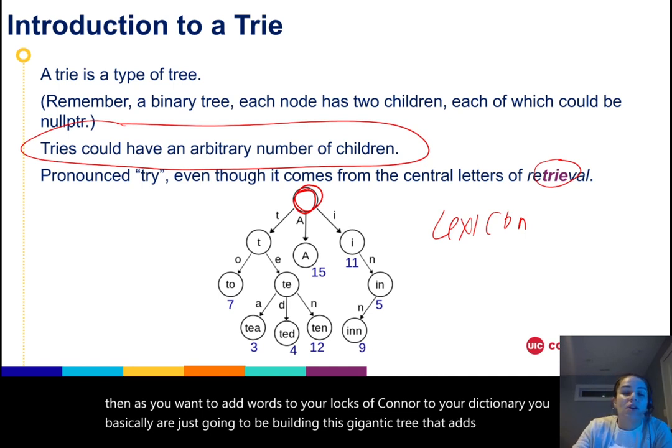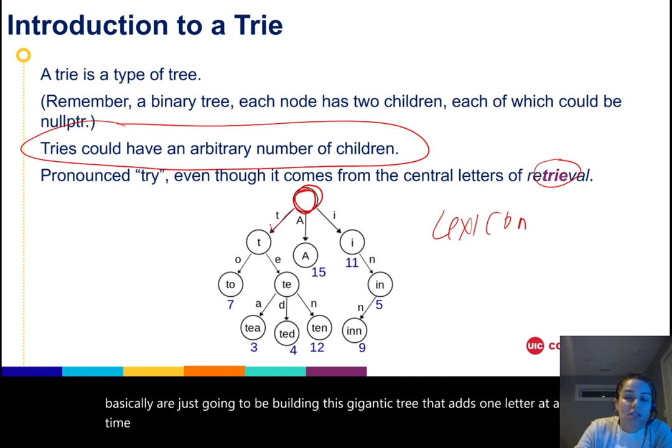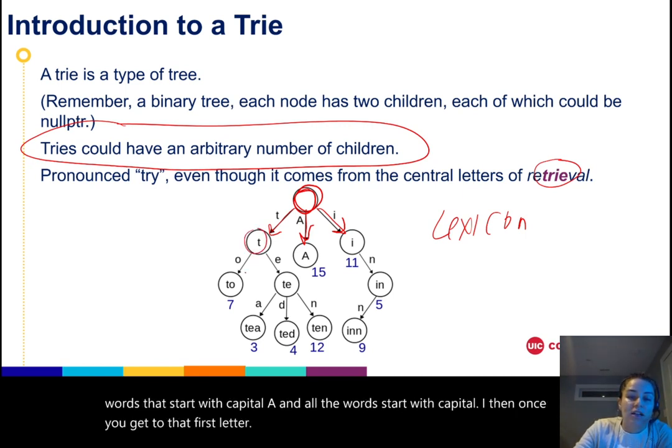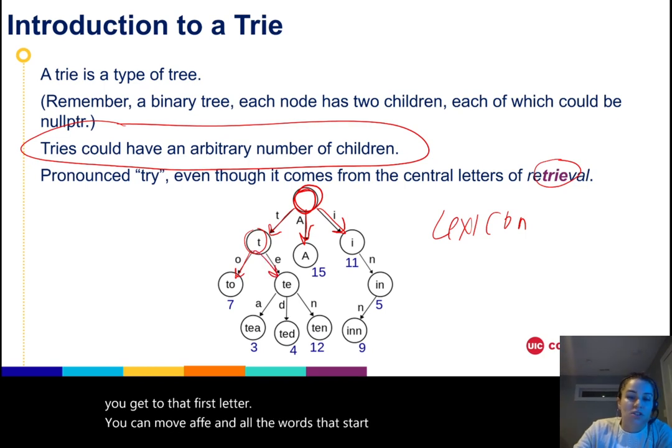All the words that start with T will go off in this direction, all the words that start with capital A, and all the words that start with capital I. Then once you get to that first letter, you can move off - all the words that start with TO, all the words that start with TE, and so on.